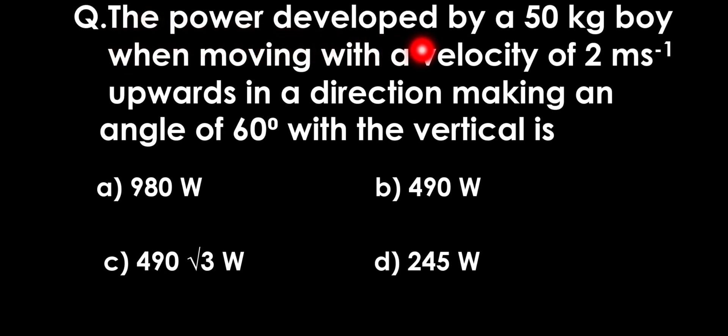The power developed by a 50 kg boy when moving with a velocity of 2 meters per second upwards in a direction making an angle of 60 degrees with the vertical is: a) 980 watt, b) 490 watt, c) 490